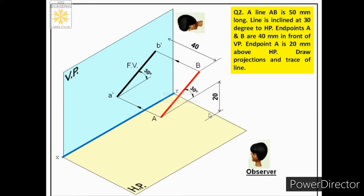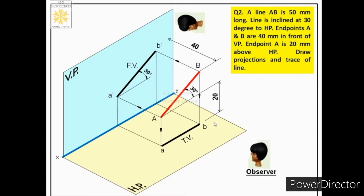In order to get the top view, the observer will see the line from the top and both endpoints will be projected onto the horizontal plane. These two projections will be connected with a straight line, called the top view of the line. The top view obtained is a reduced view, denoted by small letters A and B. These two views are drawn such that front view is above the top view.